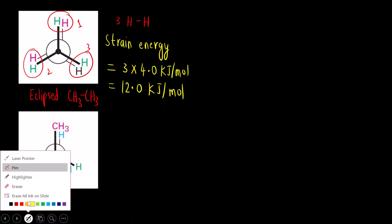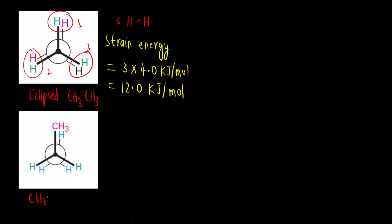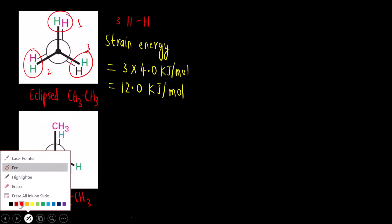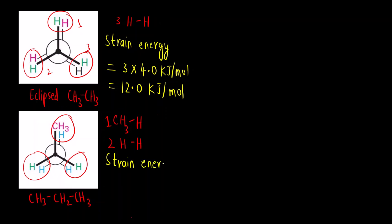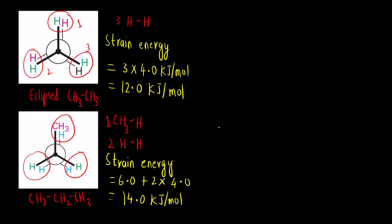The second molecule is the eclipsed conformation of propane (CH3–CH2–CH3). There are two CH3–H interactions and two H–H eclipsing interactions. Strain energy: for CH3–H it is 6 kJ/mol, and for H–H it is 4 kJ/mol, so total = 6 + (2 × 4) = 6 + 8 = 14 kJ/mol. The total strain energy in the eclipsed conformation of propane is 14 kJ/mol.